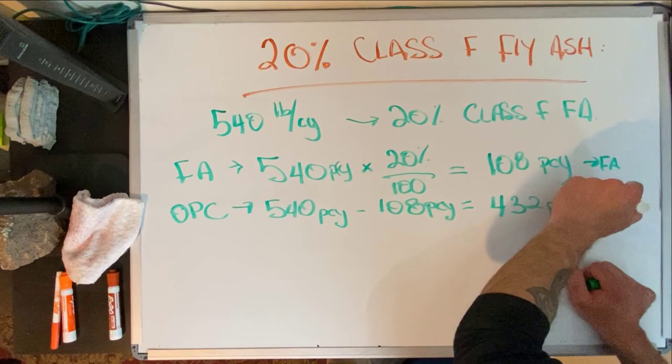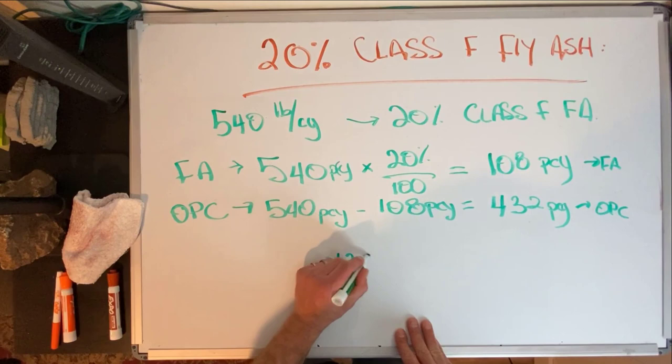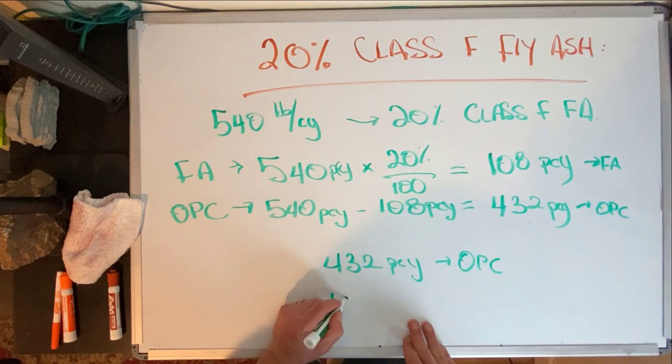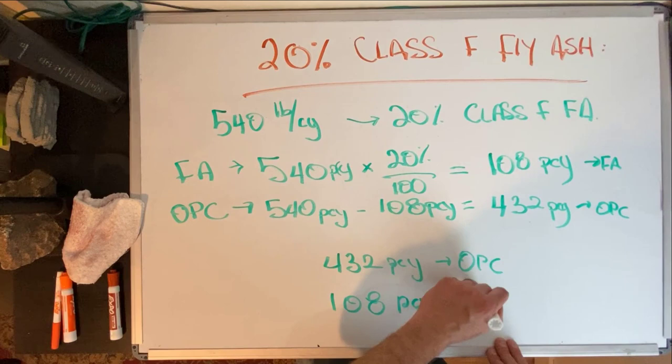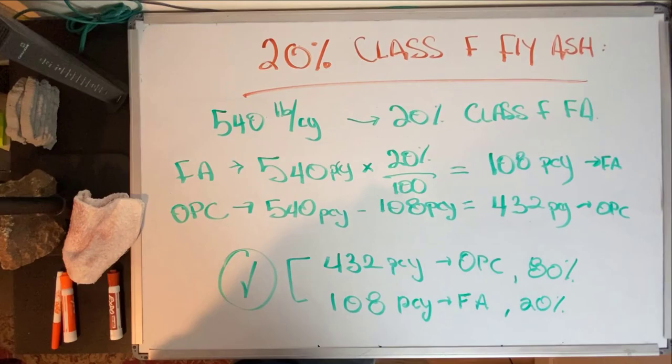there's our Portland cement. And there you have it folks, when somebody says we've got a 20% class F fly ash mix, that means 80% of that, or 432 pounds per cubic yard, is your Portland cement and 108 pounds is your fly ash. Thanks for joining us today, don't forget to like and subscribe. Go concrete, be asphalt!